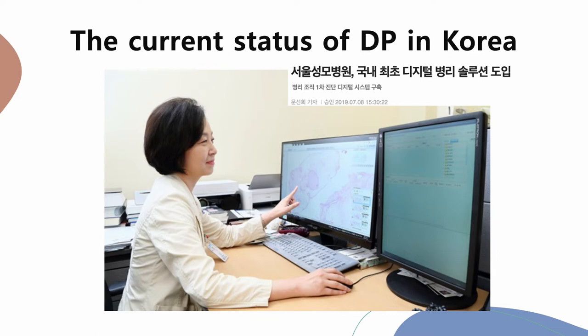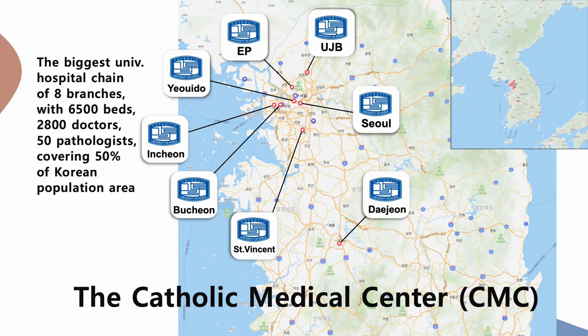I'd like to introduce the current status of digital pathology in Korea. Since Seoul St. Mary's Hospital of the Catholic University of Korea first officially introduced whole slide imaging for primary diagnosis in 2019, major university hospitals such as Seoul National University Hospitals, Samsung Medical Center, and other university hospitals followed serially. The Catholic University of Korea is the biggest university hospital chain in Korea, consisting of eight branch hospitals — Seoul, Yeouido, Uijeongbu, Incheon, Bucheon, St. Vincent, Daejeon, and Eumpyeong — with over 6,500 beds and 50 pathologists. The area these hospitals cover serves almost 50% of the Korean population.